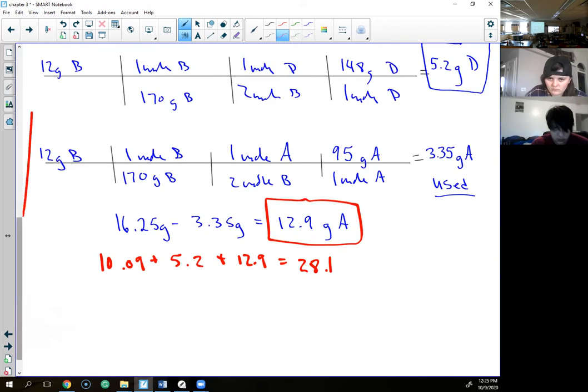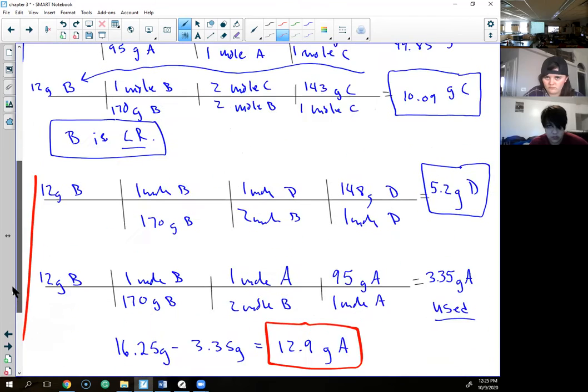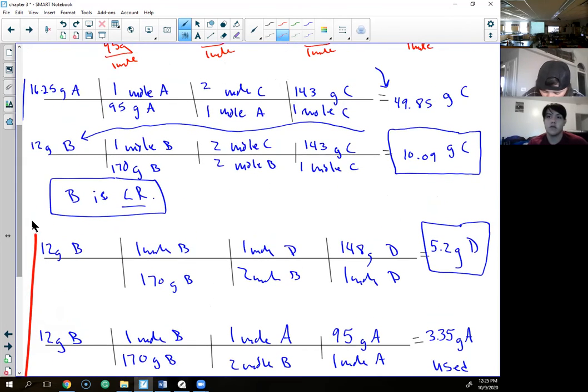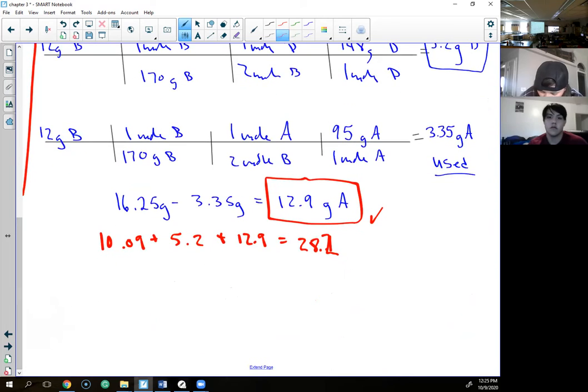Now to check my work I take 10.09 plus 5.2 plus 12.9 and what do you get? So 28.1, okay good enough. We come up here, what do we have right here? 28.25, so we were close, just rounding. We know we'd be fine now. Don't get this one wrong - we have A, we have D, we have C, but on the test it asks for all of them so you should say B is how many grams? Zero. Zero, so the limiting reactant, its mass is always zero at the end.